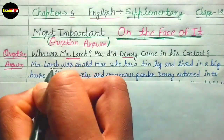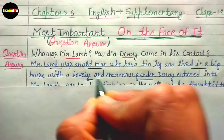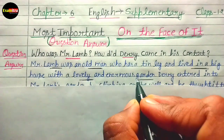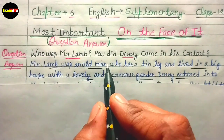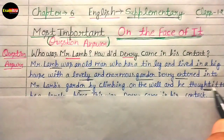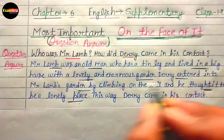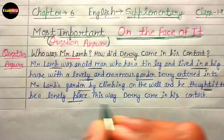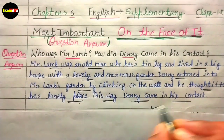Mr. Lamb was an old man who had a tin leg and lived in a big house with a lovely and enormous garden. Derry entered into Mr. Lamb's garden by climbing over the wall, and he thought it to be a lonely place — a good, quiet place. This is how Derry came in contact with Mr. Lamb. So the first question answer is complete.